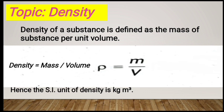The density of the object is defined as mass divided by volume. Mass is the quantity of matter in a substance, and volume is the space occupied by the object.